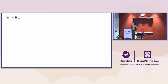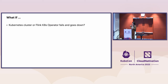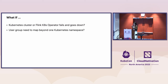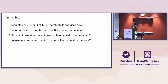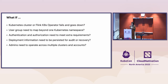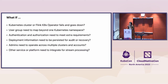Even with the Flink Kubernetes Operator in production, there are challenges running it at large scale. What if the Kubernetes cluster or Flink Kubernetes Operator fails and goes down? Can user groups map beyond one Kubernetes namespace for multi-tenancy? Authentication and authorization may need to meet extra requirements. Deployment information needs to be persisted for audit or recovery — what if the cluster is down and the operator is gone as well? Admins need to operate across multiple clouds, accounts, and clusters. Other services or platforms may also want to integrate for real-time data processing.